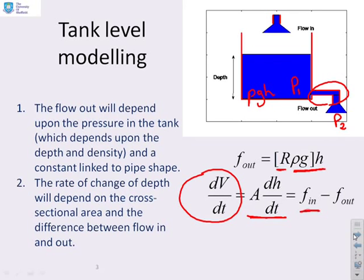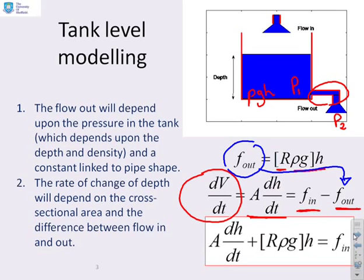And what I can do next is I can say, ah, but I know the flow out. I've determined it here. So I can put that flow out in there. And if I do that, I end up with this simple expression here. A dH/dt plus R rho g times H equals f_in. And that's the model for the depth in our tank.